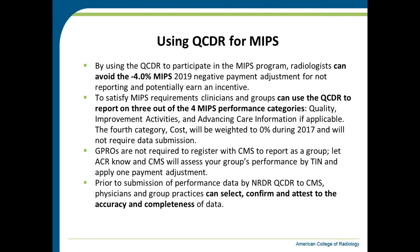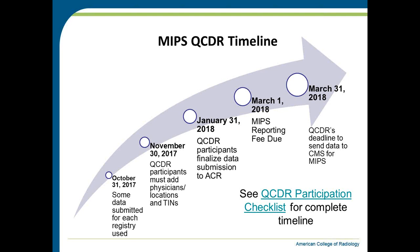You are not required to register with CMS. In 2016 you were required to let CMS know of your group reporting status, but that administrative burden has been removed for 2017. If you decide to do group reporting, CMS will assess all of your group's performance by your tax ID number and apply one payment adjustment. Prior to submission of performance data by the NRDR-QCDR to CMS, physicians and group practices can select, confirm, and attest to the accuracy and completeness of data. Right now we have a lot of people inquiring about how to attest to measures, but we will not be doing that at this early stage because we don't yet have a complete full year of data submitted to the registry.